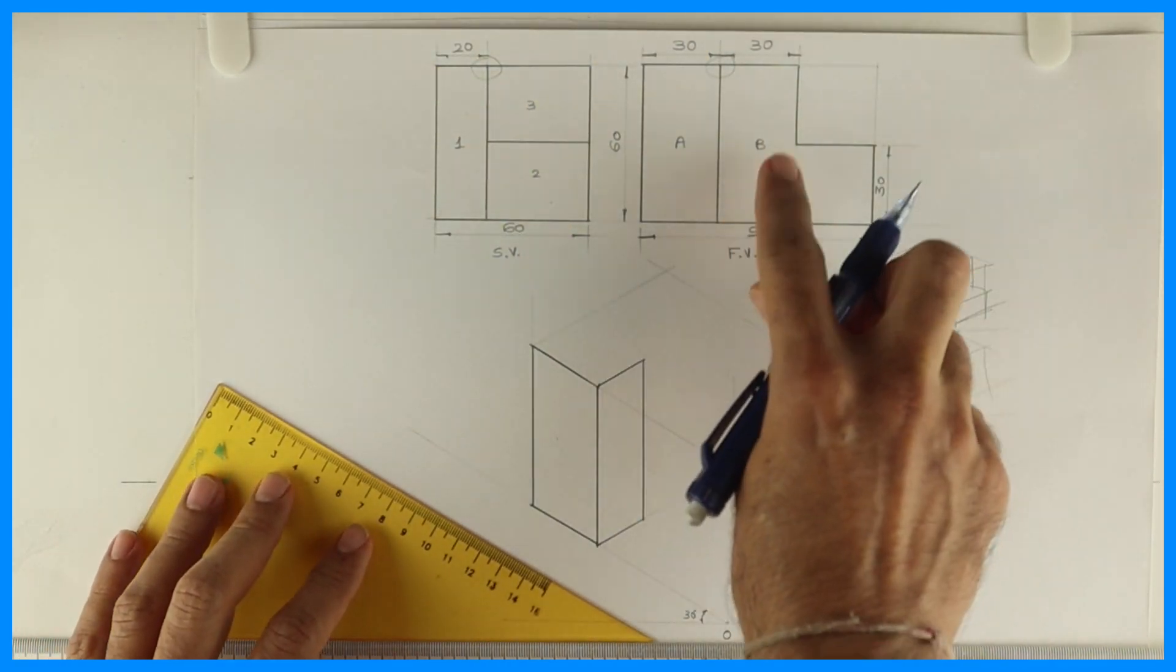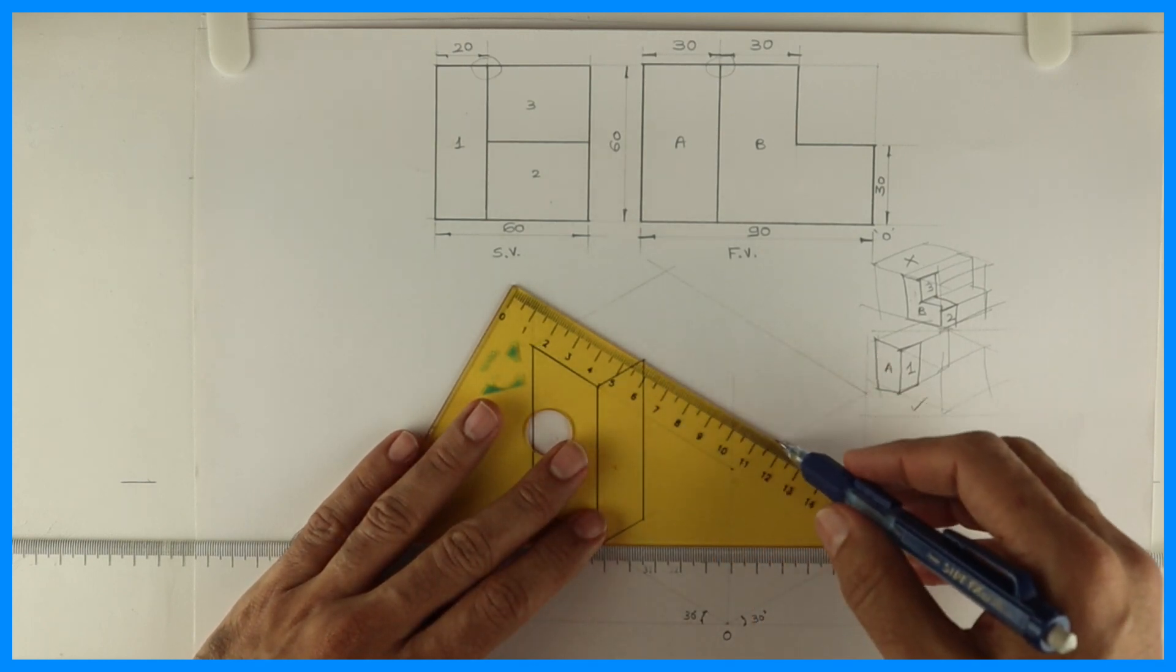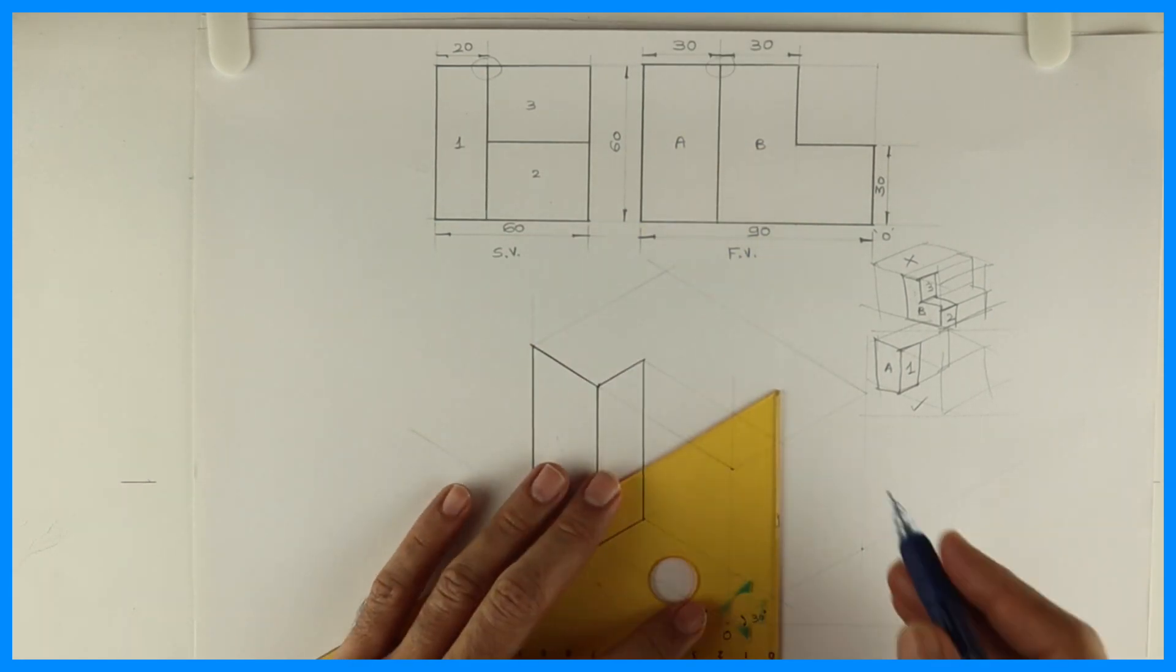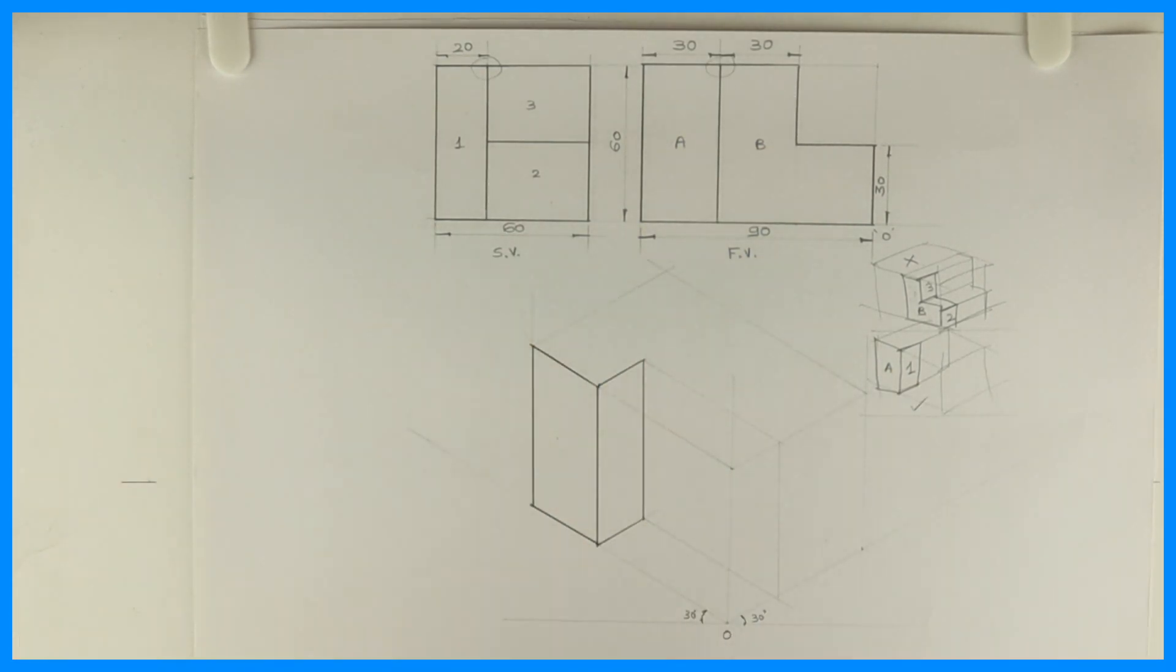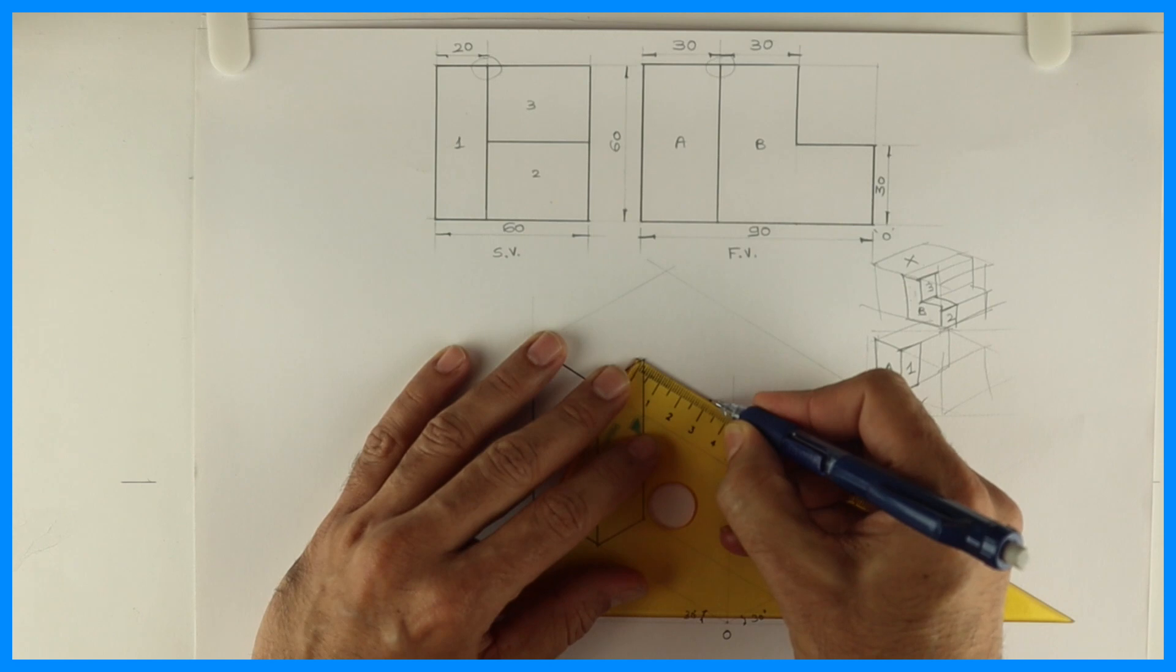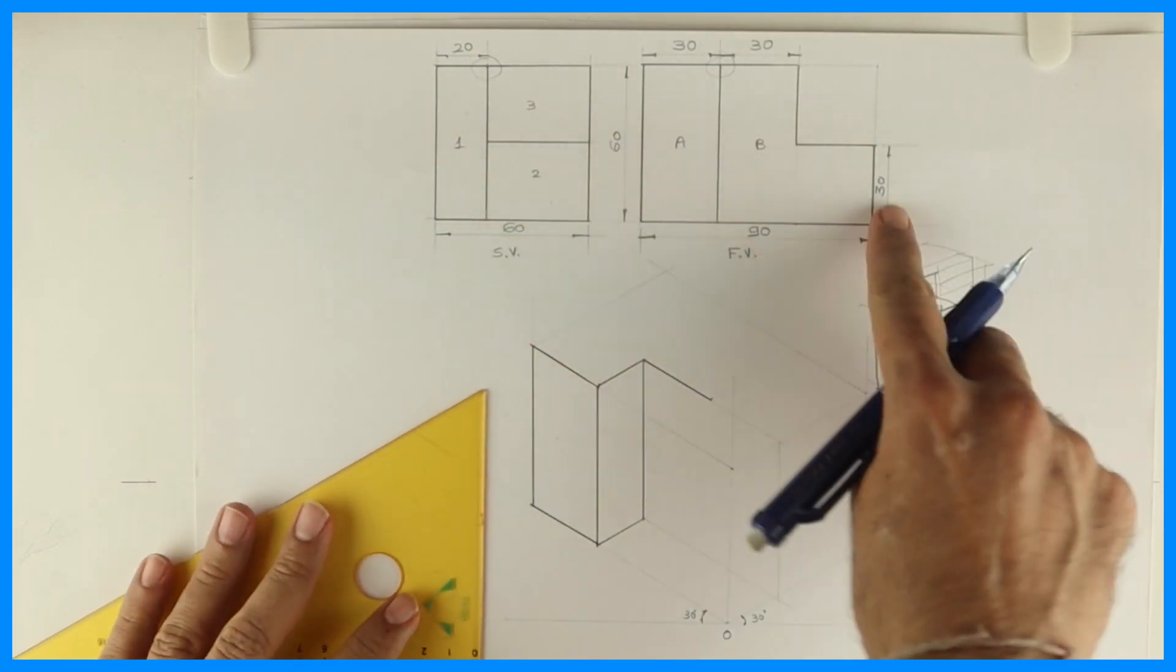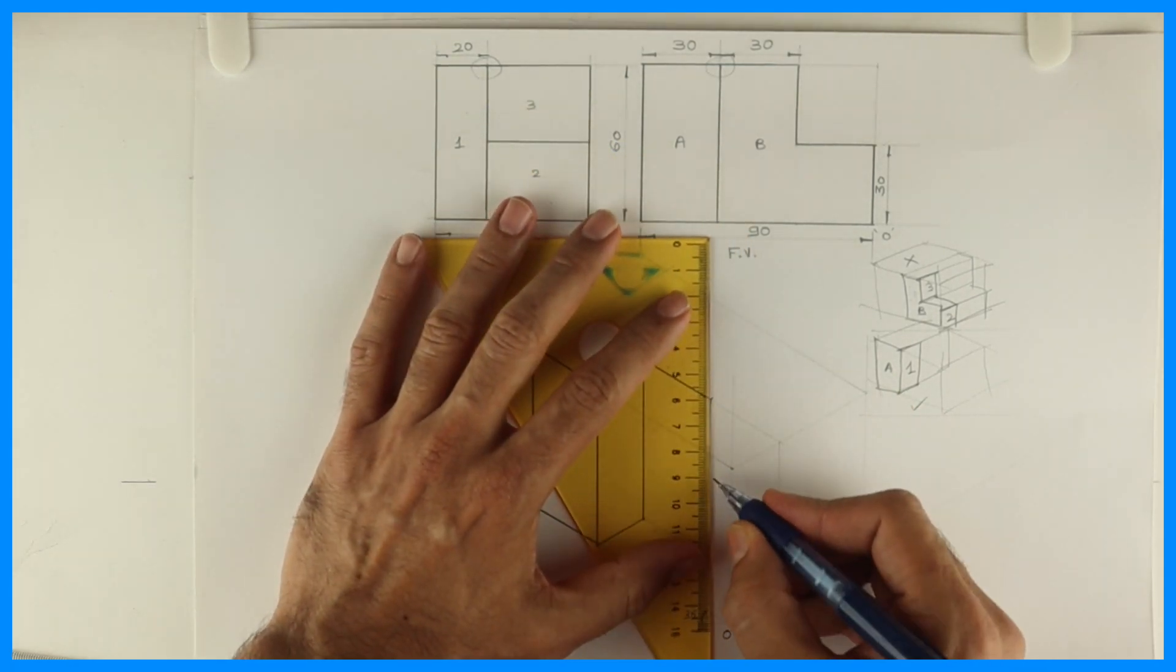Now after that, this part. If you see part B, 20, so that I can draw it from here. See this. So what I need to do? I need to extend 60 and 60. So you will get a rhombus of 60 by 60. Now in that, how much is this? 30. So we will take 30, then we will go down by 30.